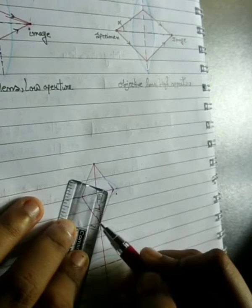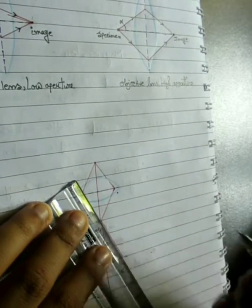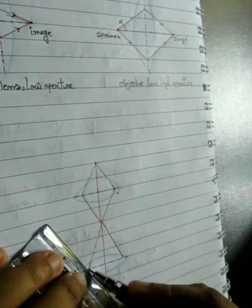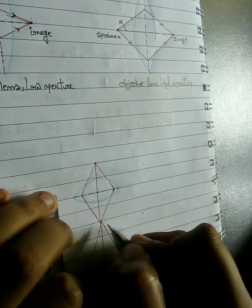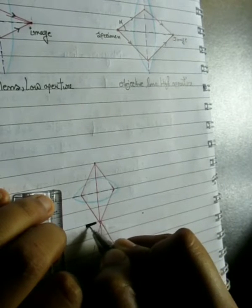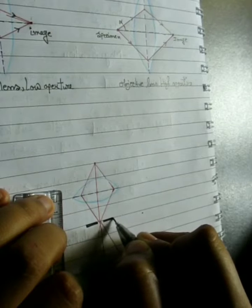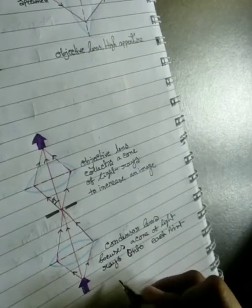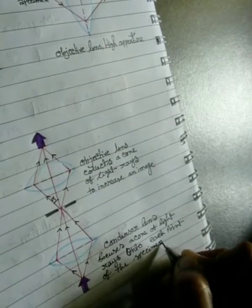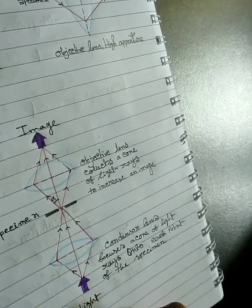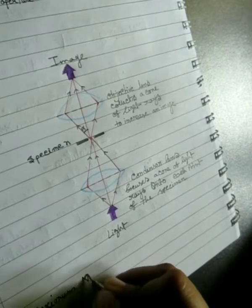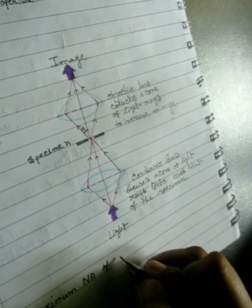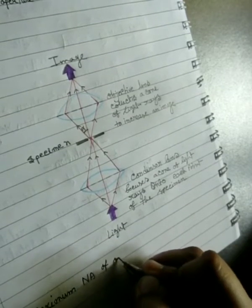To increase the numerical aperture, some microscope lenses are designed to be used with a layer of immersion oil between the lens and the specimen. Immersion oil has a higher refractive index than air and allows the lens to receive more of the light transmitted through the specimen. Since the refractive index of immersion oil is about 1.5, the maximum numerical aperture for an oil immersion lens is about 1.5 × 0.94 = 1.4. Thus, the limit of resolution is roughly 300 nm in air and 200 nm with an oil immersion lens.